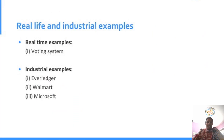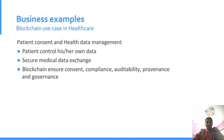Now we can see some industrial examples. The voting system is a real-time example. Some other examples are Avaledger, Walmart, Microsoft, and healthcare industries. In the blockchain use case in healthcare, a patient can control his or her own data and enable secure medical data exchange. Blockchain can ensure consent, compliance, auditability, provenance, and governance.